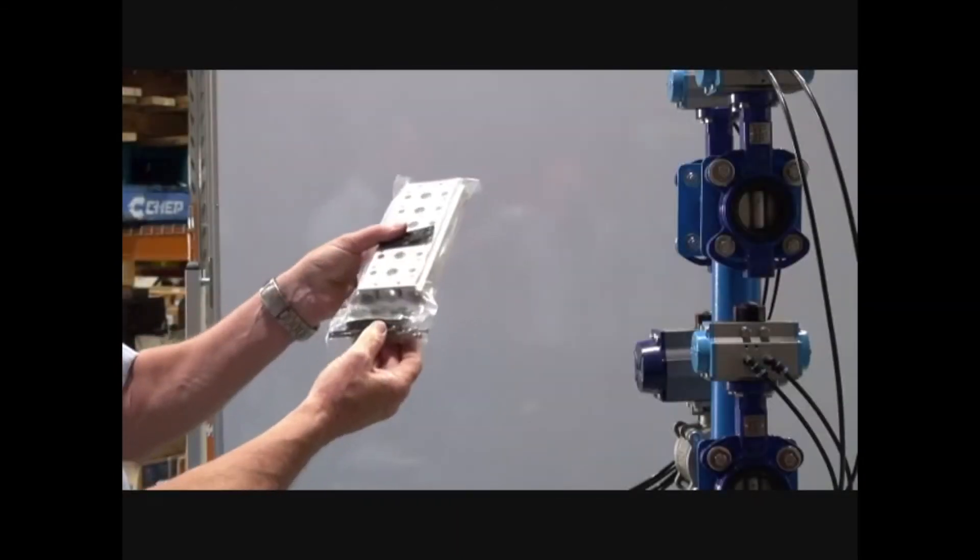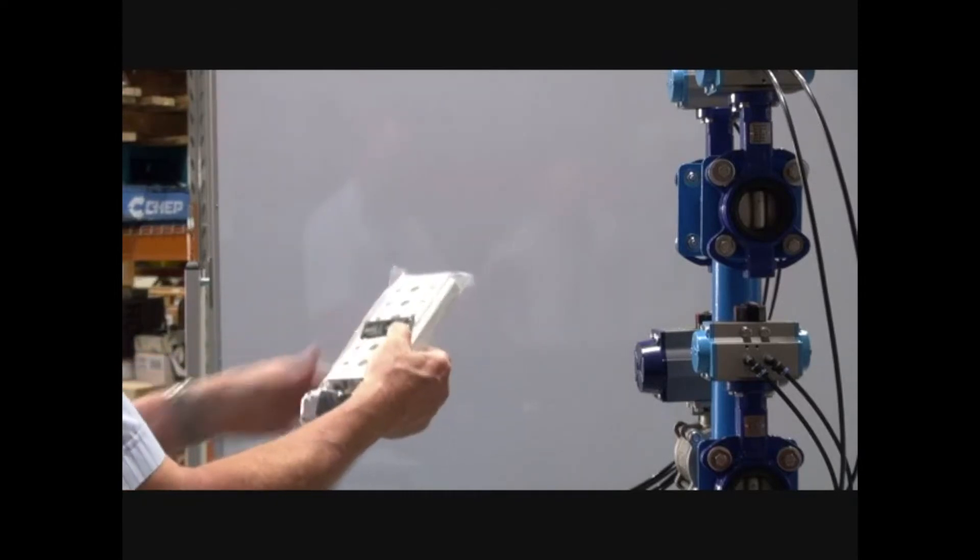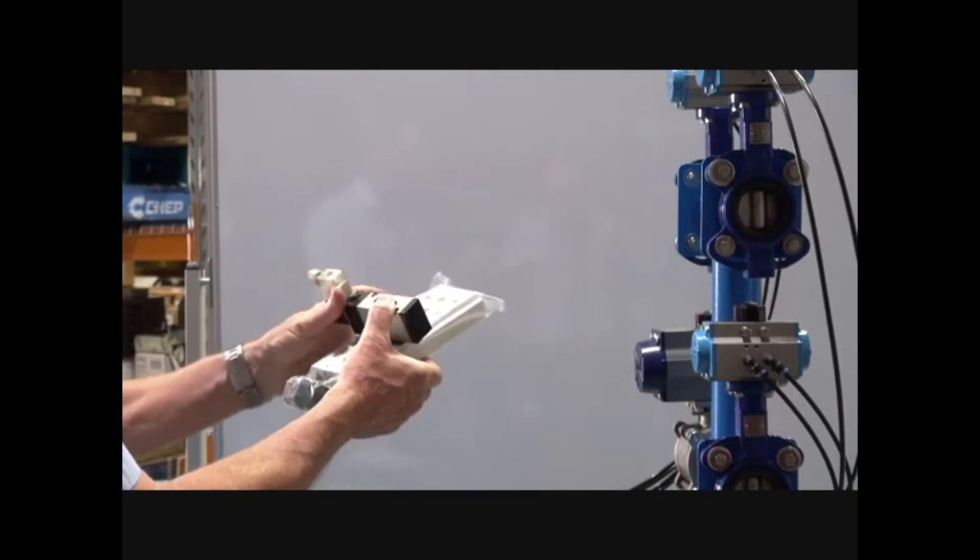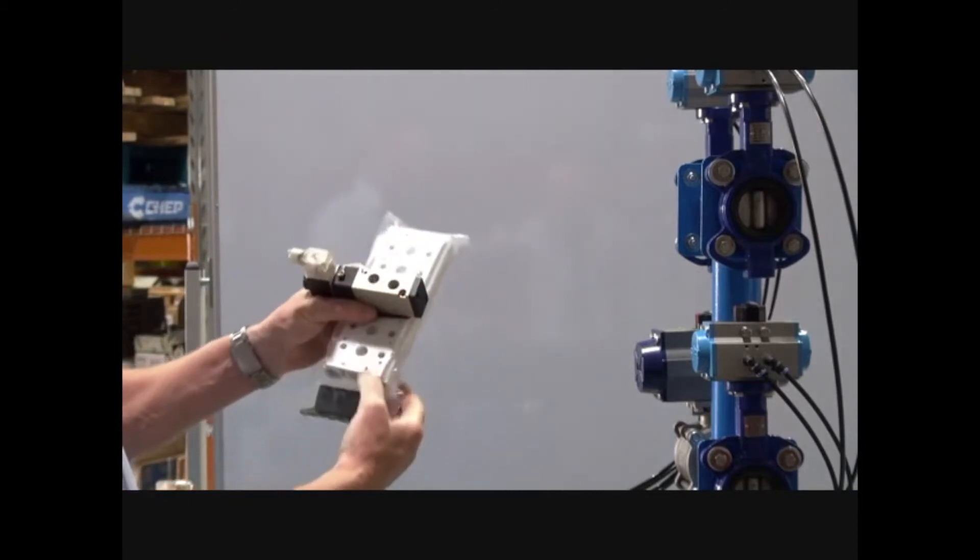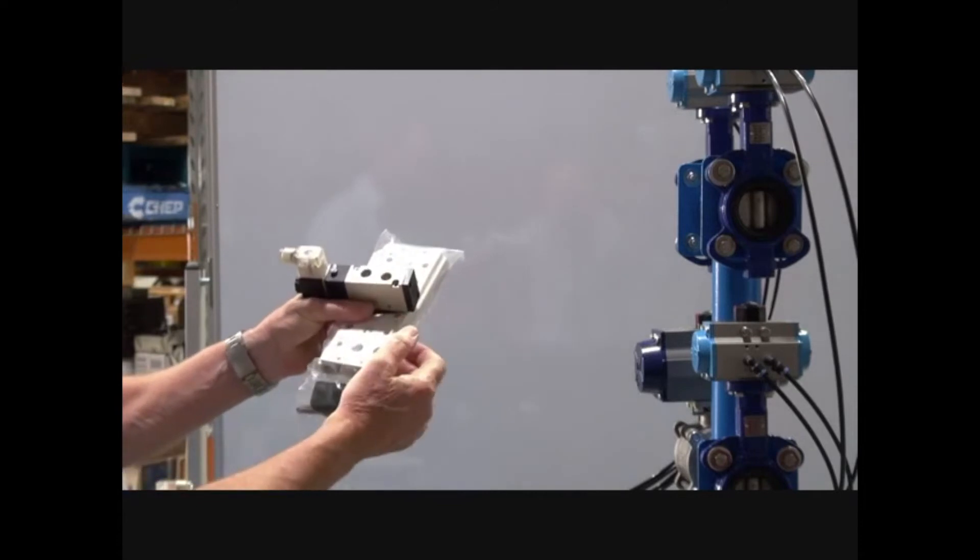Manifolds come complete with gaskets and screw assemblies that allow the valve to be bolted onto the top. There's a complete assembly of those in all multiples.